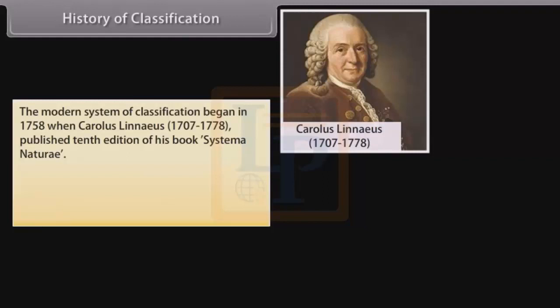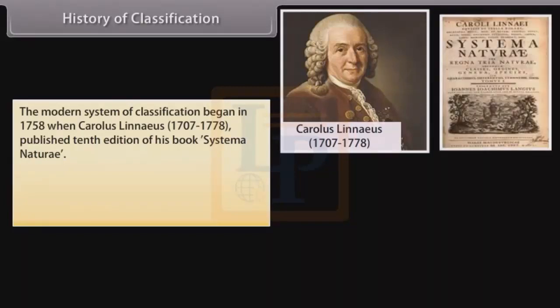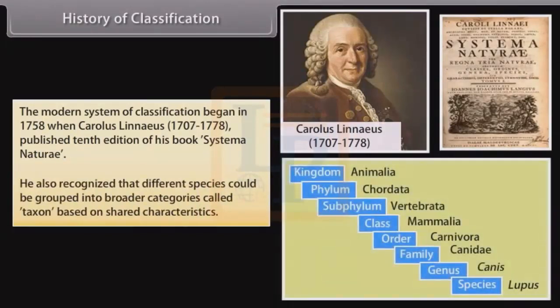The modern system of classification began in 1758 when Carolus Linnaeus (1707–1778) published the 10th edition of his book Systema Naturae. He also recognized that different species could be grouped into broader categories called taxon, based on shared characteristics.